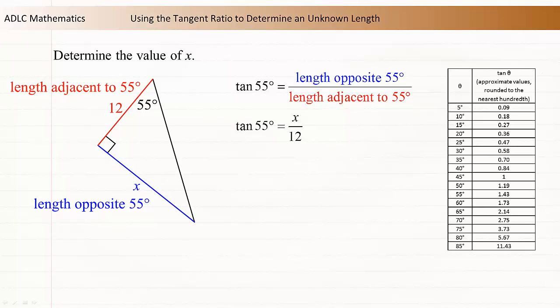Now we can use a tangent table to determine the value of the tangent of 55 degrees. The tangent of 55 degrees is approximately 1.43. Substitute 1.43 for tan 55. The tangent values in the table are rounded, so we use the approximate equal symbol in the equation. All the calculated values after this will be approximate.